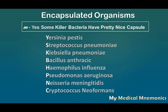Yersinia pestis causes plague. Streptococcus pneumoniae and Klebsiella pneumoniae cause pneumonia. Bacillus anthracis is the causative organism for anthrax. Haemophilus influenzae also causes respiratory infections like pneumonia. Pseudomonas aeruginosa, Neisseria meningitidis, and Cryptococcus neoformans are causative organisms for meningitis.